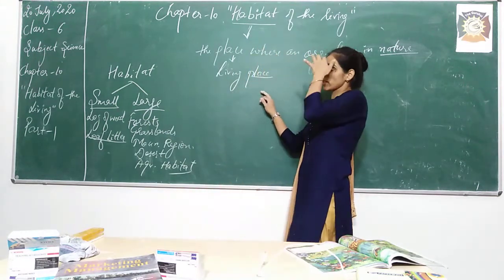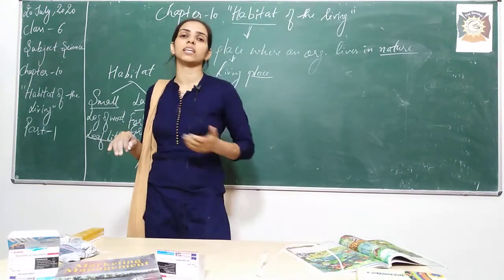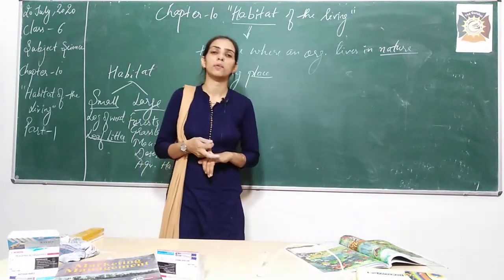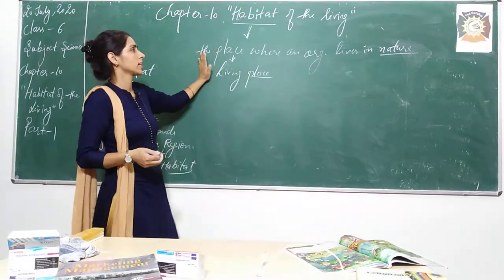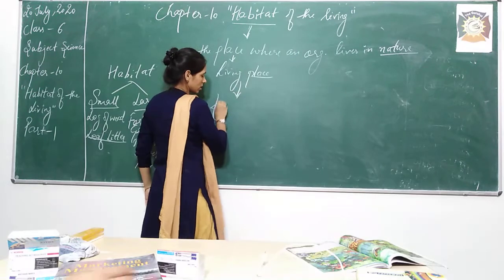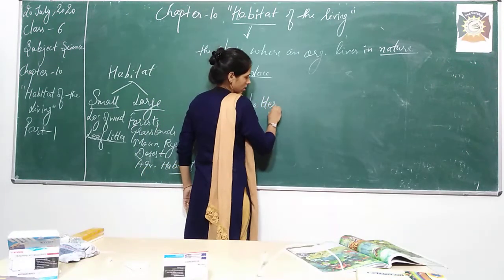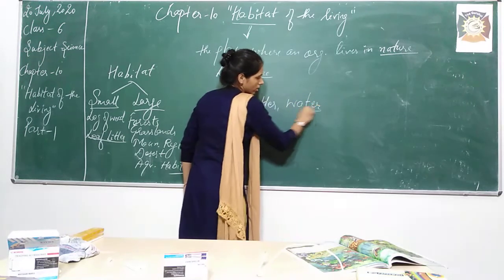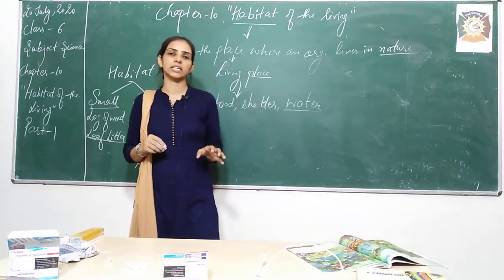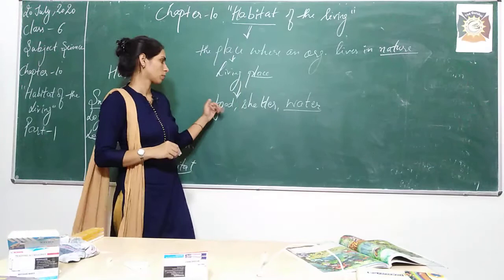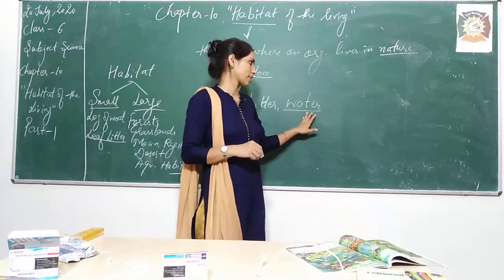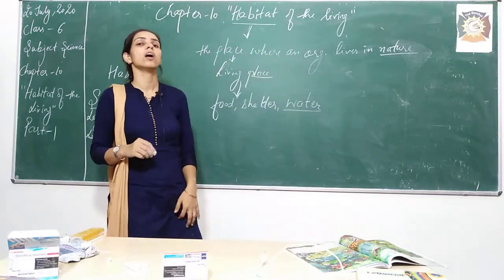So the next question is: how do we live there? Is there any facility which is provided by these habitats? Yes, there are many facilities provided by the habitat. Always keep in mind, habitat is the place but only that place which will provide food, shelter, and water. So habitat will provide an organism the very basic facilities to live — food, shelter, and water.